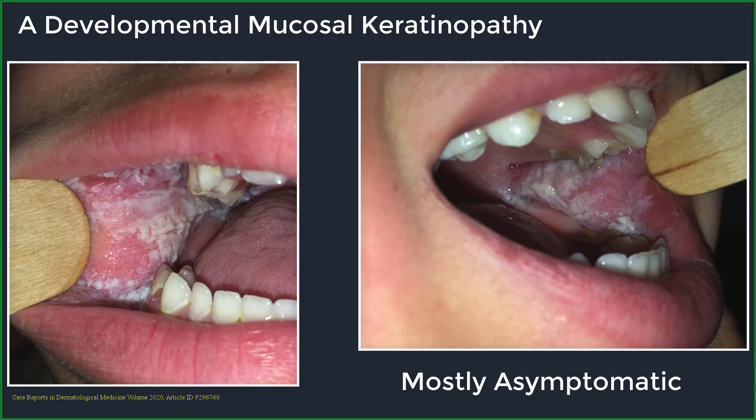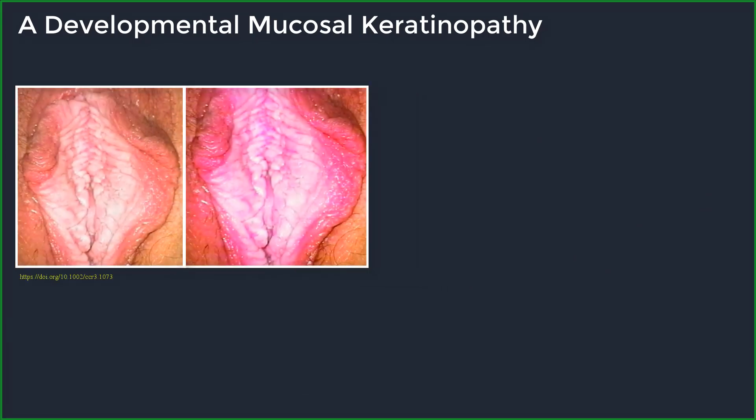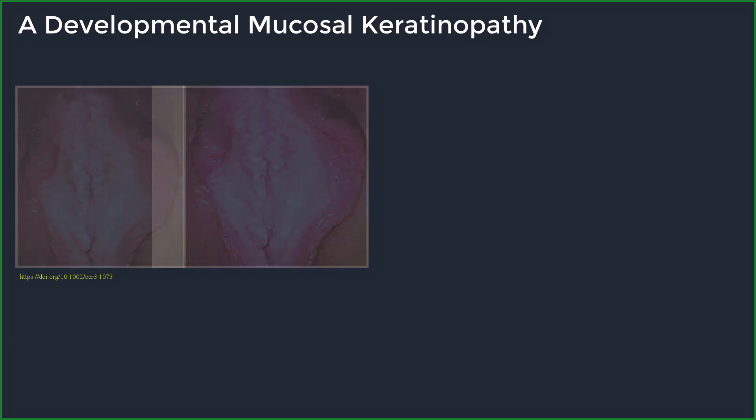The disorder has no racial or gender predilection, and the female genital mucosa is thought to be the most frequent extraoral site to be affected. This picture demonstrates the involvement of the mucosal surface of the labia minora. Most cases are asymptomatic, often discovered incidentally during a clinic visit for other possibly unrelated reasons.